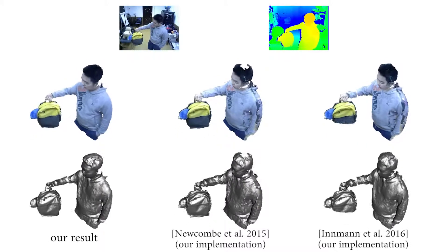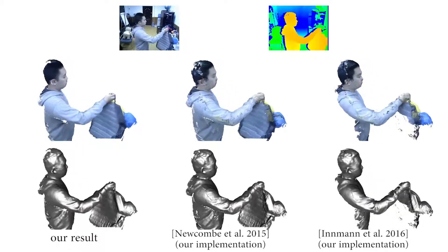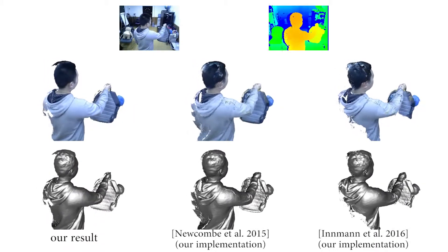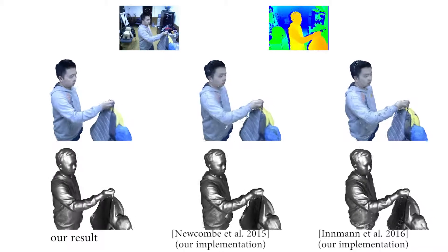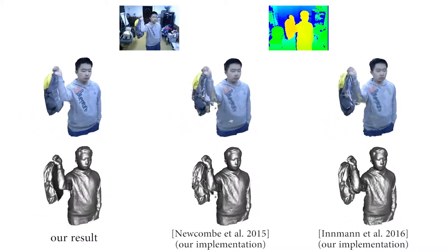In the following, we show more comparisons between the three methods. Again, our method achieves a more complete reconstruction than the other two methods because it recovers both the albedo and low-frequency lighting of the scene, in addition to the geometry.